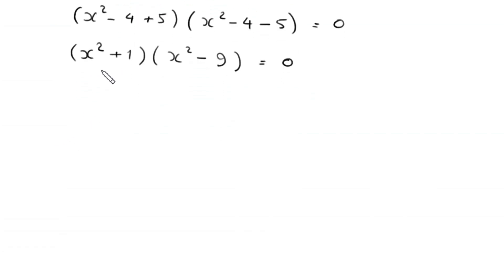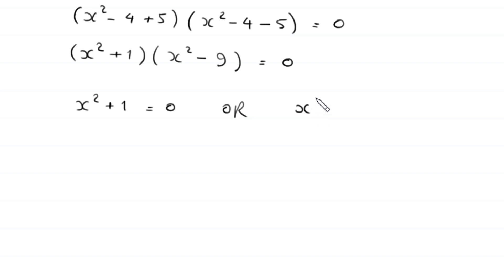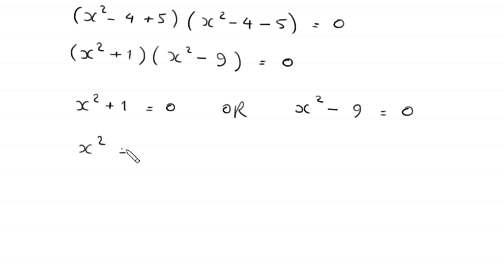From the factored form, either x² + 1 = 0 or x² - 9 = 0. From the first equation, we move +1 to the right-hand side, so x² = -1.